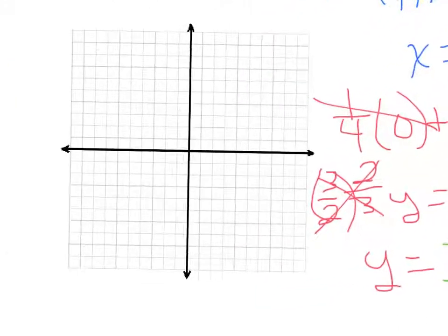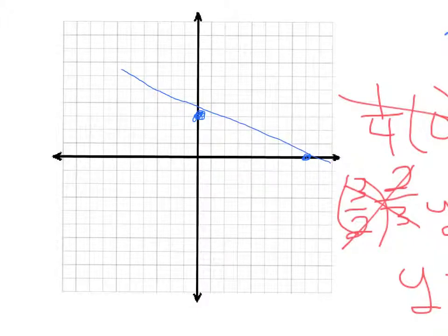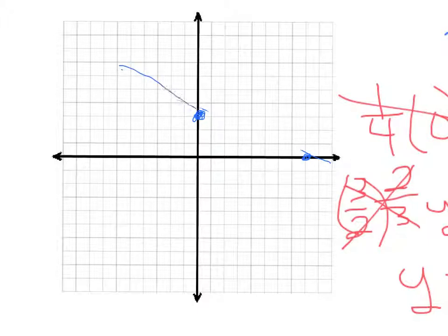Those are our intercepts: (8, 0) and (0, 3). The x-intercept (8, 0) goes here on the graph, and the y-intercept (0, 3) goes here. We connect the dots. And I know you're all probably laughing at my free-handing these lines — it's not as easy as you might think.